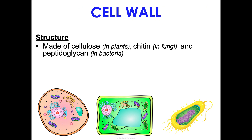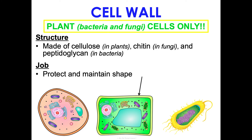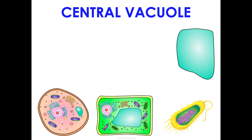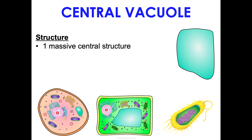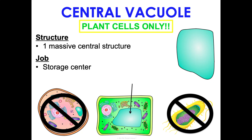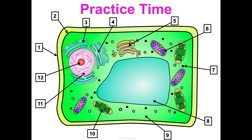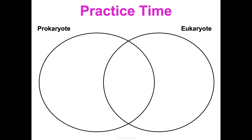The cell wall is made of cellulose in plants, chitin in fungi, and peptidoglycan in bacteria. It protects and maintains the cell's shape and is not found in animal cells. The central vacuole is specific to plant cells — one massive storage structure for water, sugars, and other materials, since plants make their own food from sunlight. Now we'll do lots of practice labeling cell parts, comparing and contrasting prokaryotes and eukaryotes, and comparing animal and plant cells.